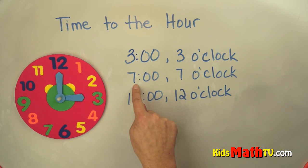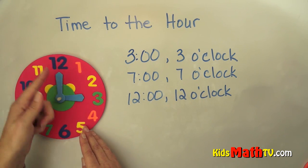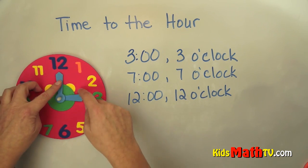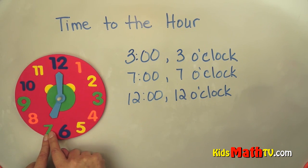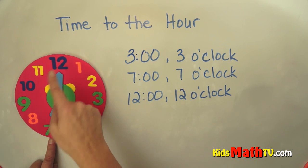If I want to show 7 o'clock, it's still o'clock so it's still going to be straight up with the 12. But the small hand or the little hand will be on the 7. This shows 7 o'clock.